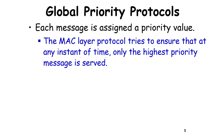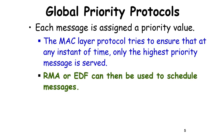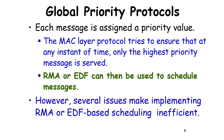The CAN bus is an example of a global priority protocol. Each message is assigned a priority value, and the MAC layer protocol tries to ensure that at any point the highest priority message is served, as we have seen with the CAN bus. RMA or EDF can then be used to schedule the messages — similar algorithms to those used for CPU scheduling.